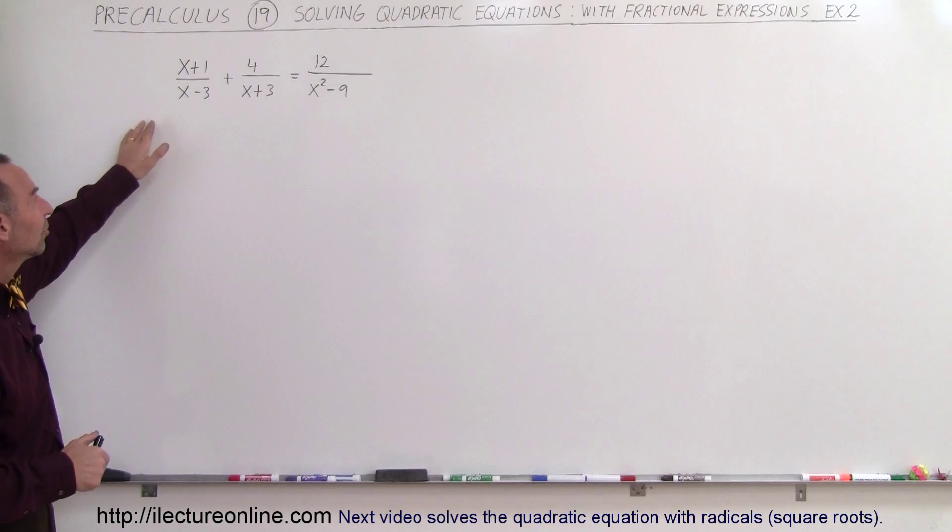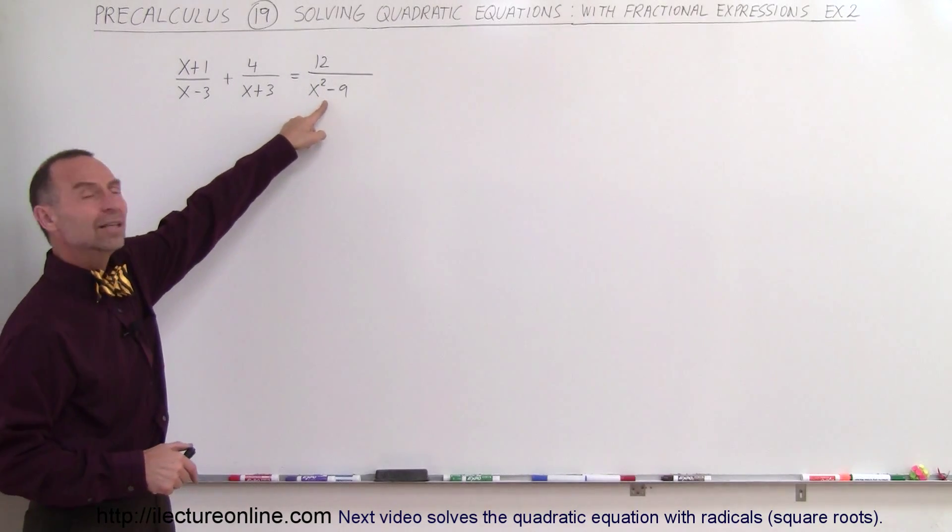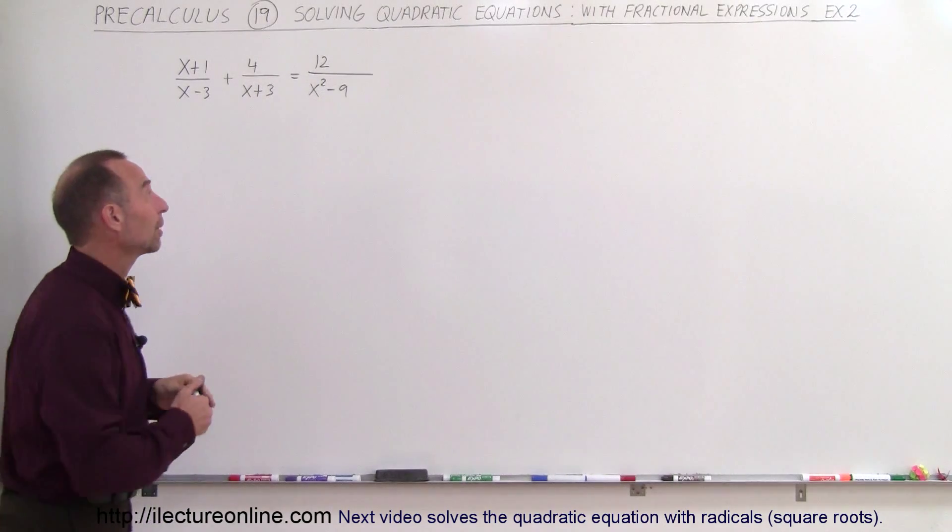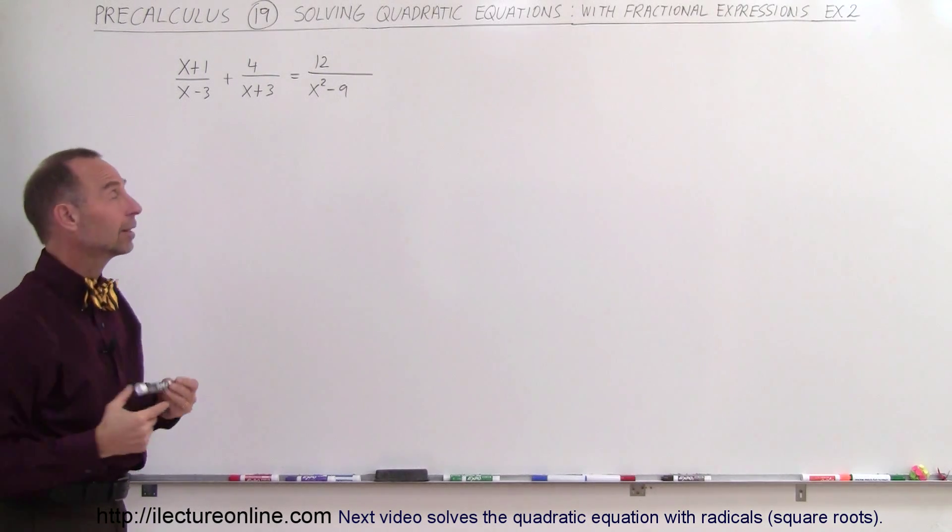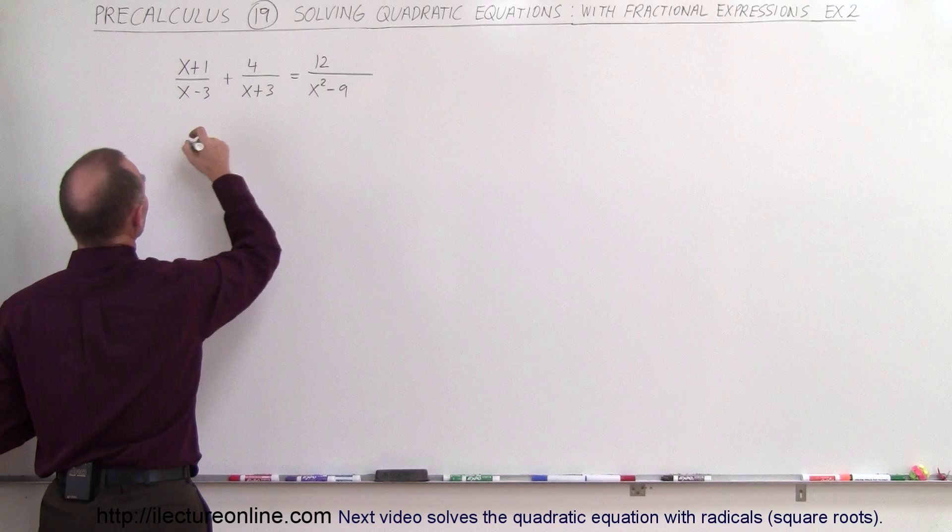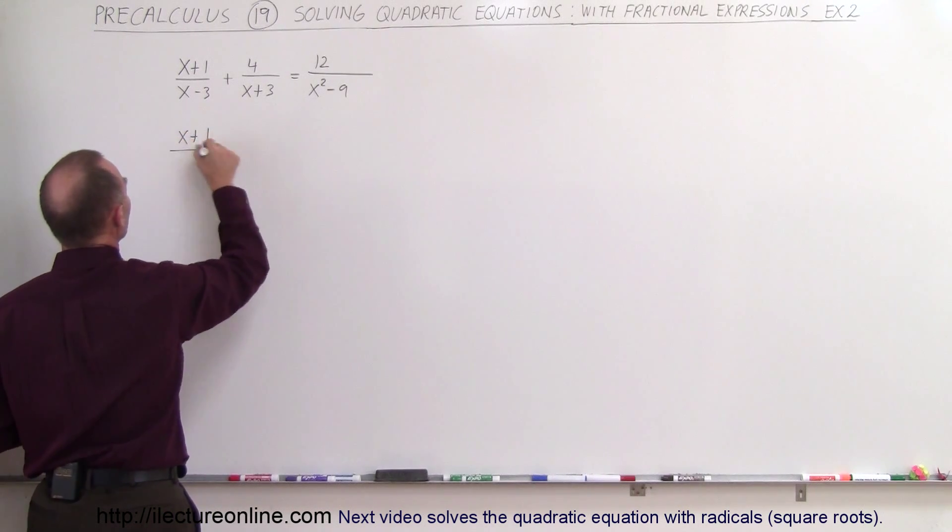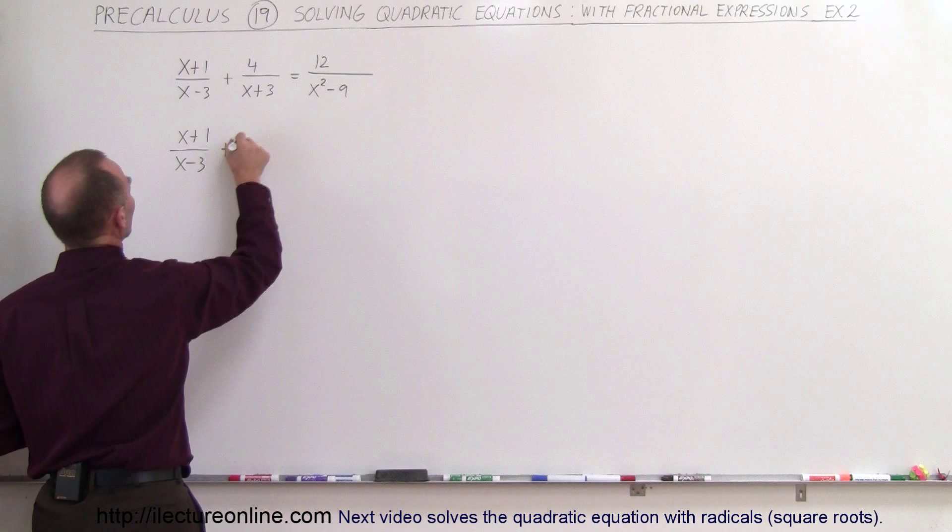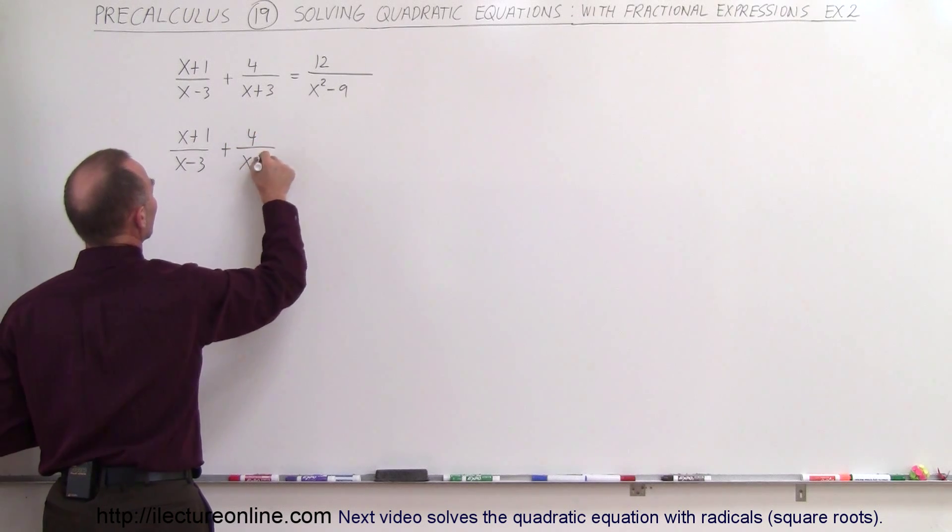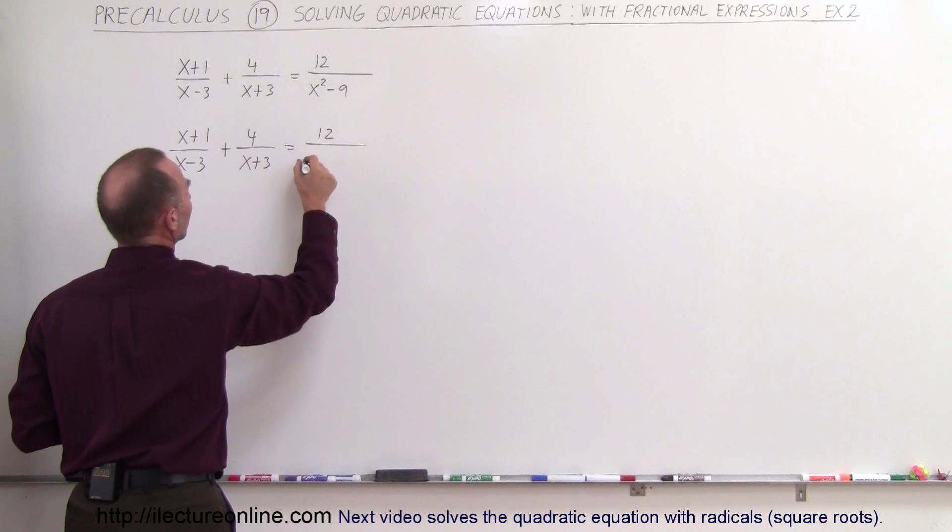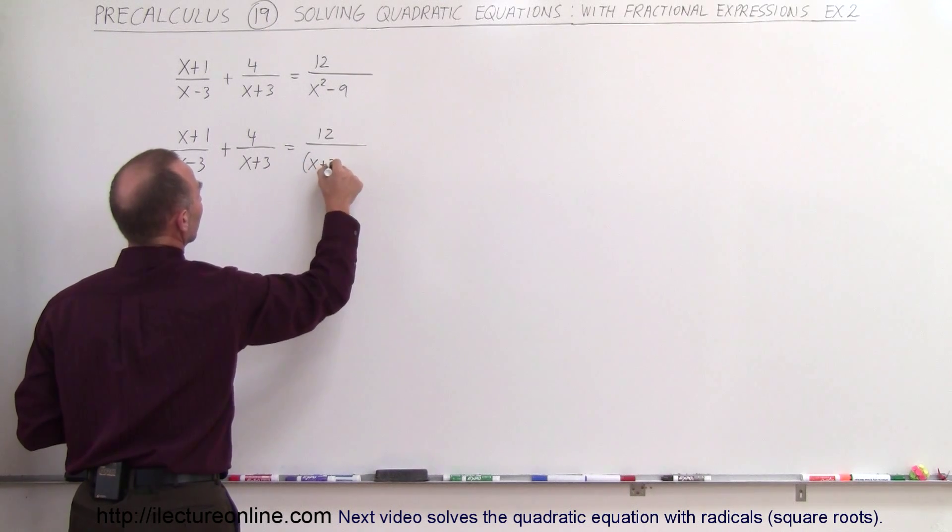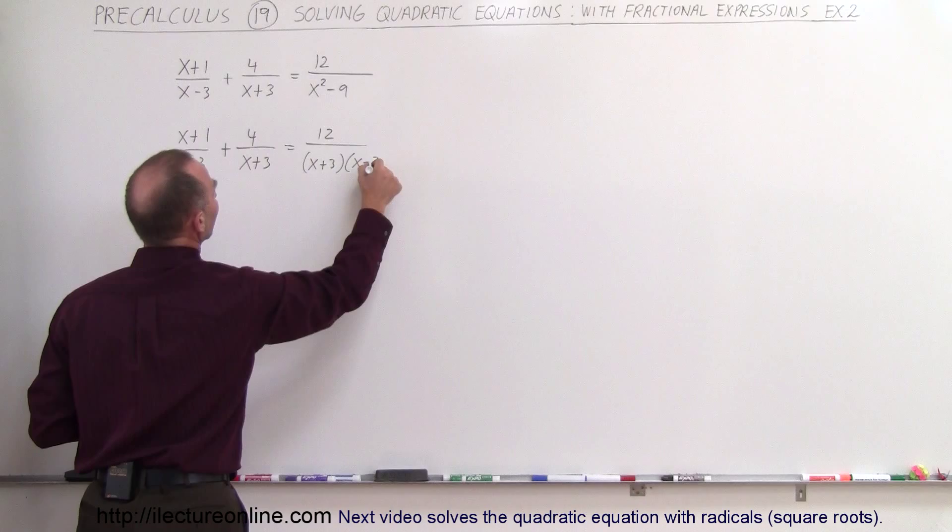So here we see that this needs to be factored first, because we want to make sure that we have a full understanding of what the denominators look like before we try to eliminate them. We can do that by rewriting this as x plus 1 divided by x minus 3 plus 4 times x plus 3 equals 12 divided by, and since this is a difference of squares, this factors to x plus 3 times x minus 3.